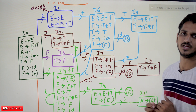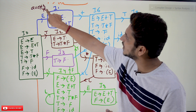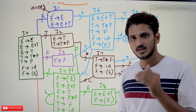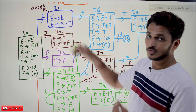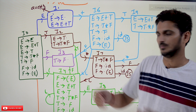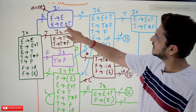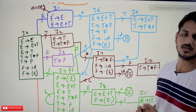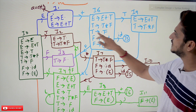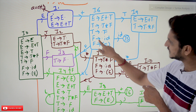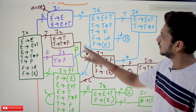Starting from I₀ we have constructed I₁, I₂, I₃, I₄, and I₅. On state I₁, E' → E• means if we see dollar the input string is accepted — that is how we express acceptance using LR(0) items. Now expanding I₁: moving one step on plus gives E → E + •T. Since dot is before non-terminal T, we add T productions: T → •T * F, T → •F; dot before F gives F → •id and F → •( E ). This is state I₆.